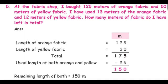Length of orange fabric equals 125 meters. Length of yellow fabric equals 50 meters. To find the total length of both fabrics we must add them: 125 plus 50 equals 175 meters. The total length of fabric is 175 meters.